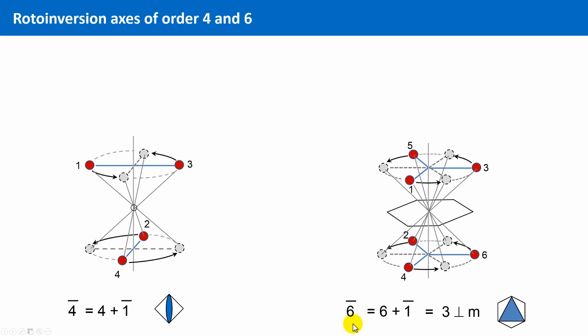Two further principles can be derived concerning the totality of rotoinversions. Even rotoinversions automatically contain an axis of rotation of half of the order. The rotoinversion 4 bar contains a 2-fold axis of rotation, and the rotoinversion 6 bar always contains automatically a 3-fold axis of rotation.